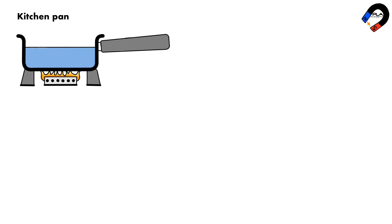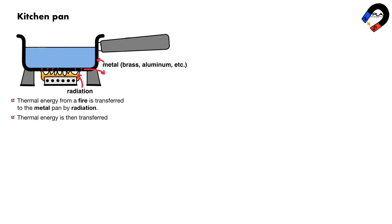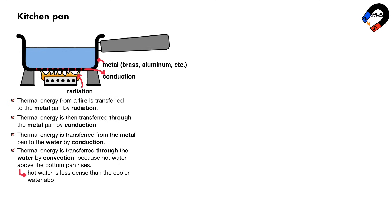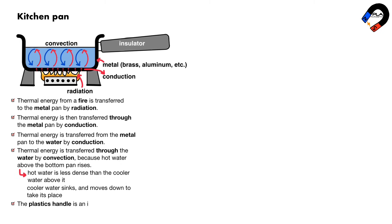The kitchen pan is heated using a fire. The pan is made of metal such as brass or aluminium. Thermal energy from the fire is transferred to the metal pan by radiation, then transferred through the metal pan by conduction. Thermal energy is transferred from the metal pan to the water by conduction, and through the water by convection because hot water above the bottom of the pan rises — hot water is less dense than the cooler water above it. Cooler water sinks and moves down to take its place. The plastic handle is an insulator to reduce thermal energy transfer to the hand by conduction.